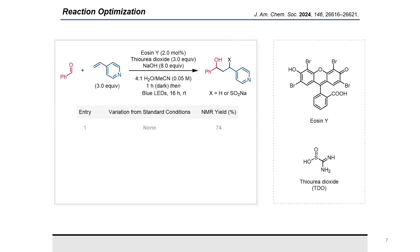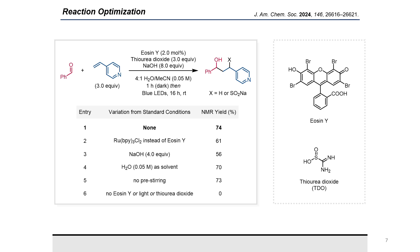Encouraged by the preliminary result, extensive optimization was carried out. Under optimal conditions, a 74% overall yield was obtained. Using [Ir(bpy)Cl]₂ with a similar excited state oxidation potential gave a comparable yet slightly lower yield, whilst lowering the equivalence of base also reduced the yield, although a comparable result was achieved using water as the only solvent. Acetonitrile was chosen as co-solvent to ensure dissolution of less water-soluble substrates. Notably, without photocatalyst, light, or thiourea dioxide, no desired product was observed, supporting our proposed mechanism.